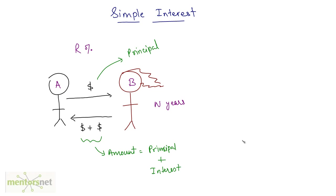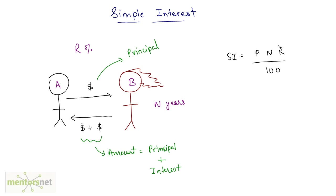Now comes the point where we write the formula for simple interest, and this is a simple formula. Simple interest is equal to P times N times R upon 100. P is the principal amount that is lent, N is the number of years this amount is used by the other person, and R is the rate of interest per annum.